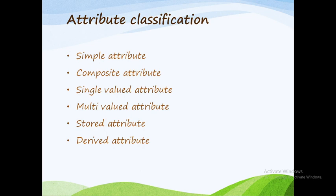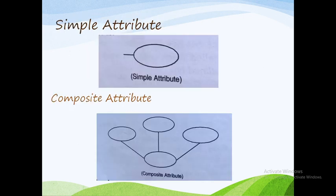First, simple attribute. A simple attribute consists of a single atomic value. A simple attribute is represented in the form of an ellipse in an ER diagram. Single atomic value means one value only. For example, consider the attribute age — every person has one age.